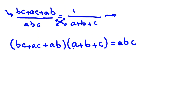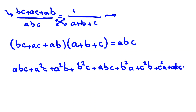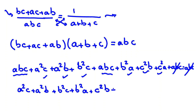Expanding the left side by multiplying A through all terms: ABC plus A squared C plus A squared B. Then multiplying B: B squared C plus ABC plus B squared A. Then multiplying C: C squared B plus C squared A plus ABC. This equals ABC on the right side. We can cancel one ABC from each side, and notice we have 2ABC remaining. So we get A squared C plus A squared B plus B squared C plus B squared A plus C squared B plus C squared A plus 2ABC equals zero.